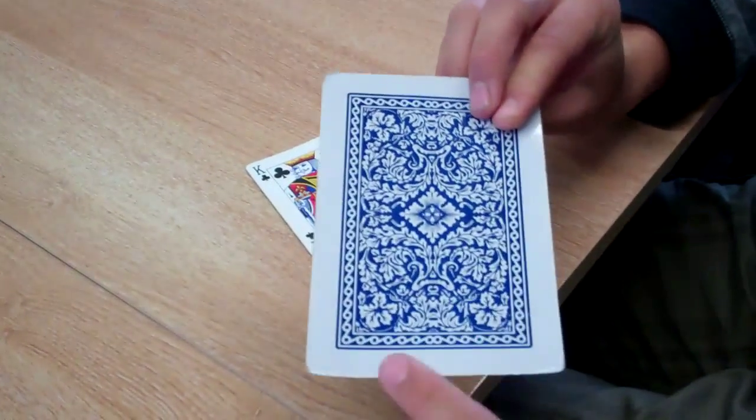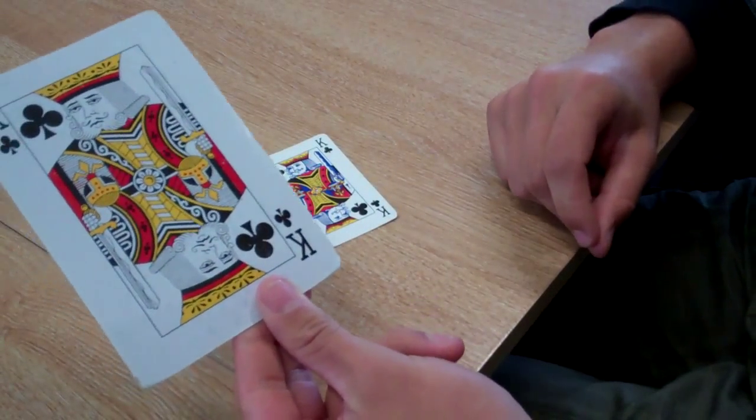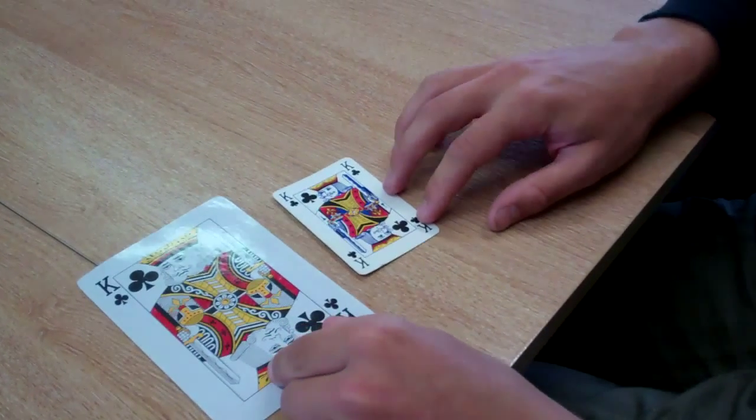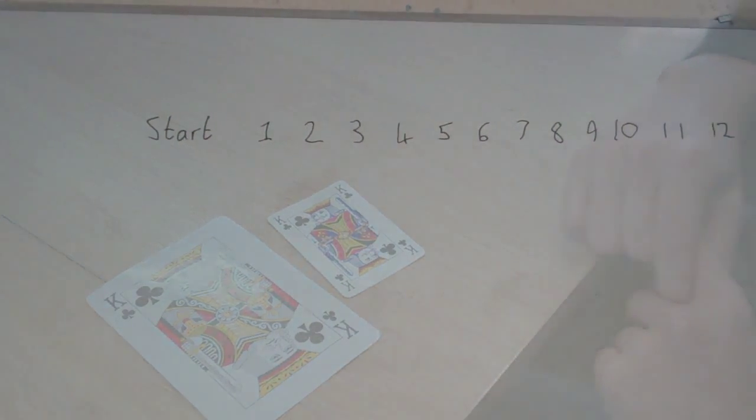All right. Now, my predicted card is also the king of clubs. How did I know that? Magic. And this is how you do the trick.